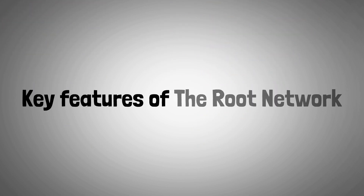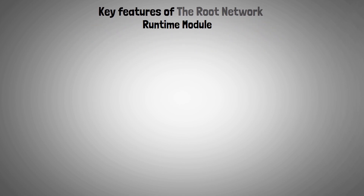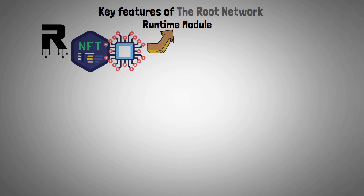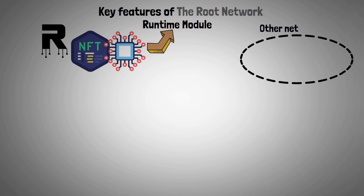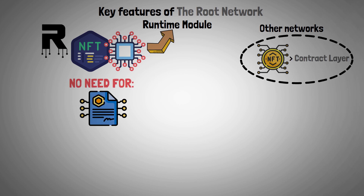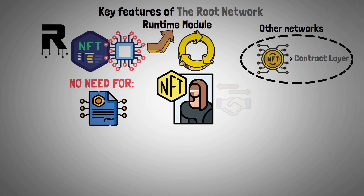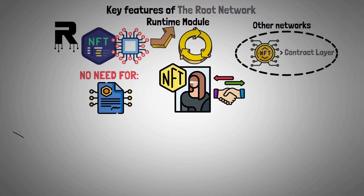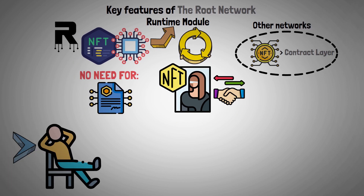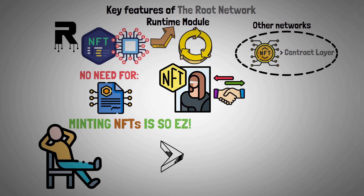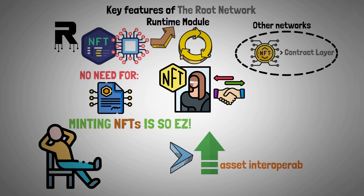Let's present key features of the Root Network. The Root Network's NFTs are housed in a Core Network runtime module, in contrast to other networks where NFTs are found at the contract layer. Without requiring users to create smart contracts, the runtime module can be used to generate unique NFTs and trade them. In addition to making it simple for anyone to mint NFTs, this straightforward procedure encourages improved asset interoperability.